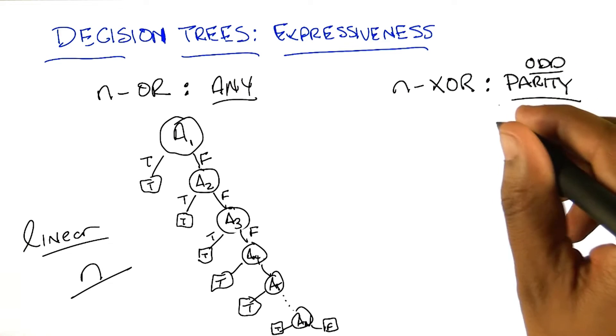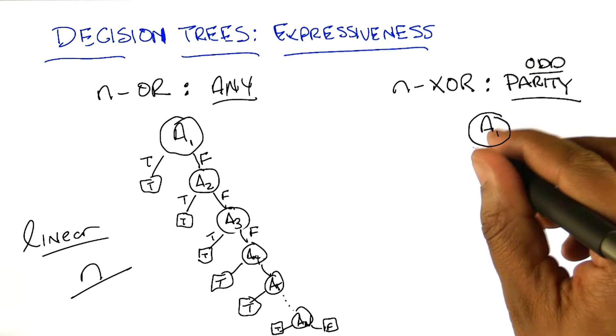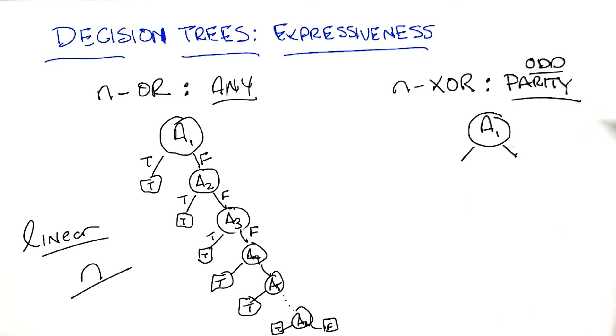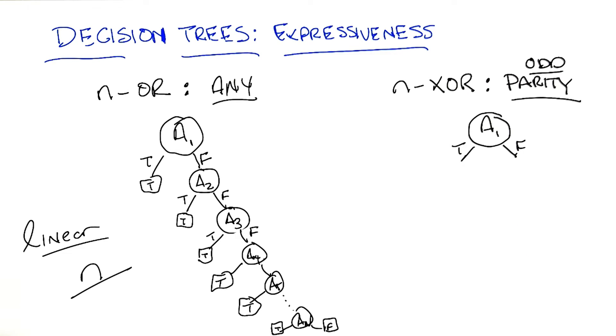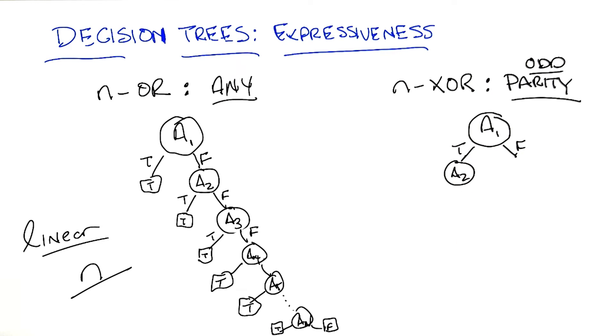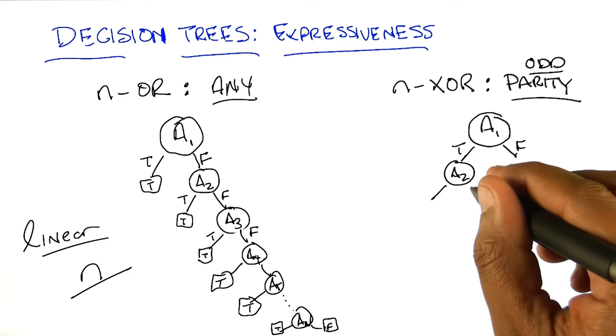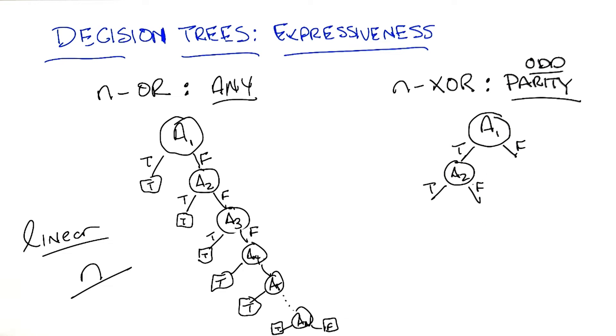Well, we gotta split on something and they're all the same, so let's split on A1 again. So what do we do if A1 is true versus being false? We don't know much if A1 is true. We have to look at everybody else. Right. So let's look at A2. What if A2 is true versus false? Well, if A1 and A2 are true, then the output is going to be whatever the parity of all the remaining variables are. So we still have to do that.